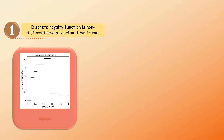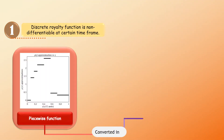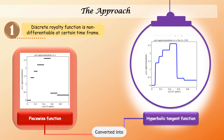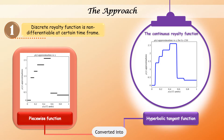Therefore, we came out with a new approach to solve the problem. Firstly, the non-differentiable royalty function, which is in the form of a piecewise function, is converted into the continuous approximation of the hyperbolic tangent function.